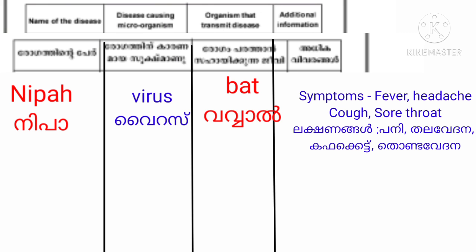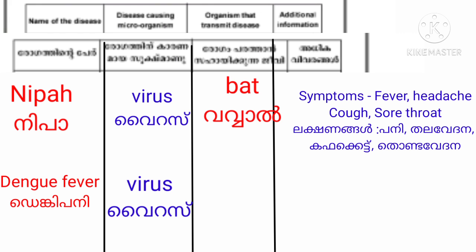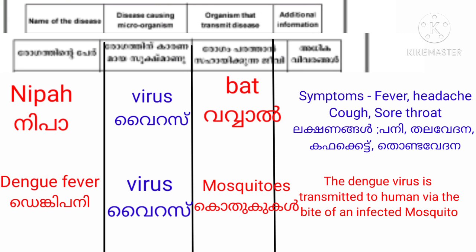Next, we have Dengue fever. The disease-causing microorganism is a Virus. The organism that transmits the disease is the Mosquito. Additional information: the Dengue virus is transmitted to humans via the bite of an infected mosquito.